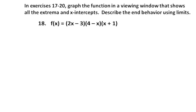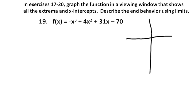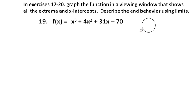Next, problem 19: f(x) equals negative x cubed plus 4x squared plus 31x minus 70. This is an odd-degree polynomial with a negative leading coefficient. As a rough sketch, not knowing the zeros yet, the function is going to come down from quadrant 2 and end up down in quadrant 4 to the lower right.